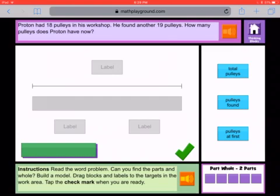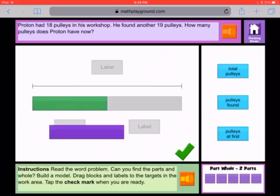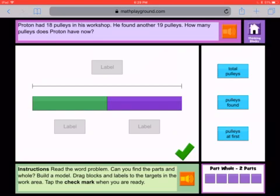Proton is our character, that's his name, and pulleys are some things that are used in a workshop. So now we need to build this bar model to help us understand this problem. I'm going to put these bars out here because it doesn't necessarily matter which one goes first right now. We have these blue icons on the right and we are going to tap and drag them over to the label sections.